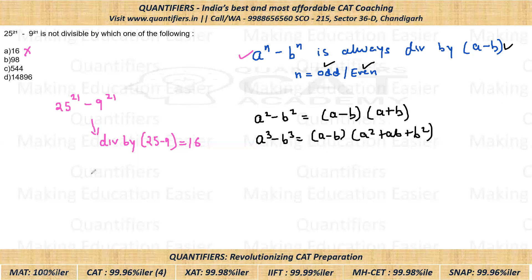Okay students, so now if you look at this equation, you can see 25 to the power 21 minus 9 to the power 21. You know 25 and 9, both are perfect squares. So I can further simplify it. Since 25 is 5 squared, I can write it as 5 squared to the power 21, which is 5 to the power 42. And 9 is 3 squared, so 3 squared to the power 21 can be written as 3 to the power 42. We can write it this way.